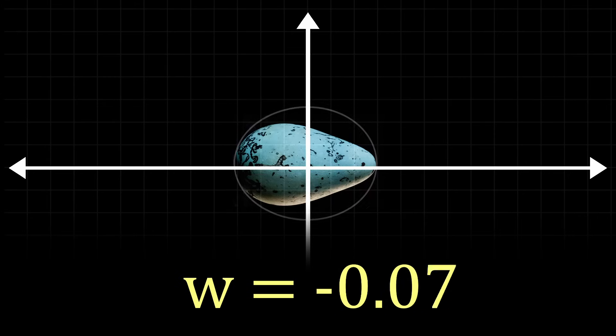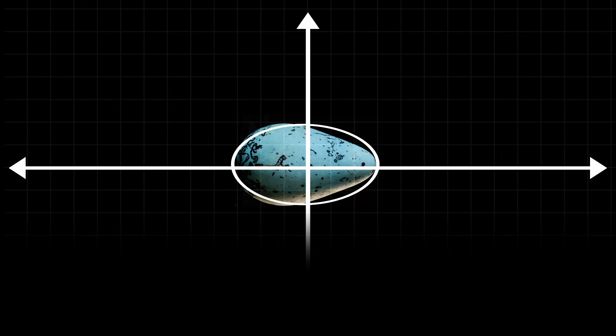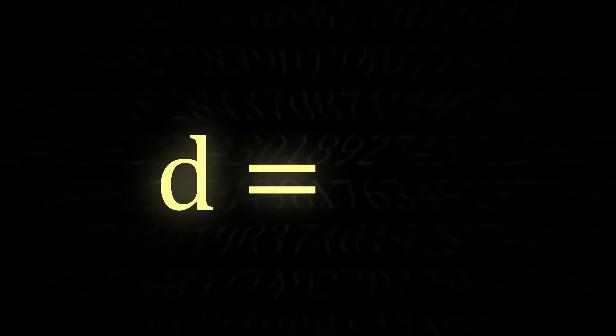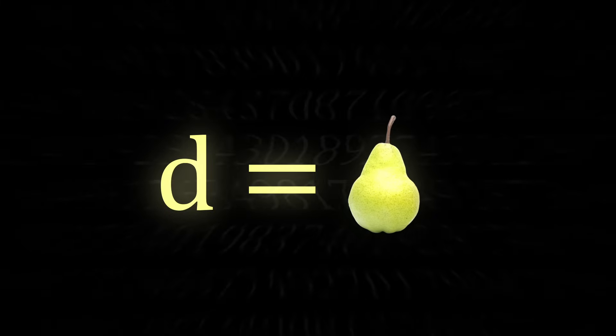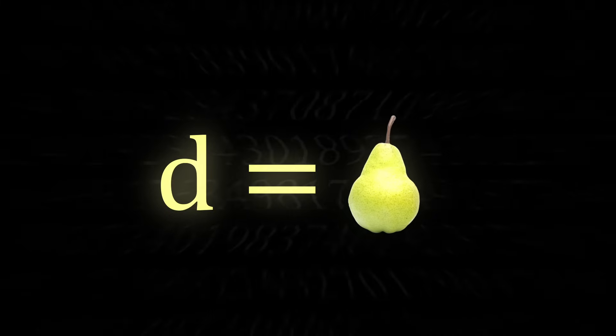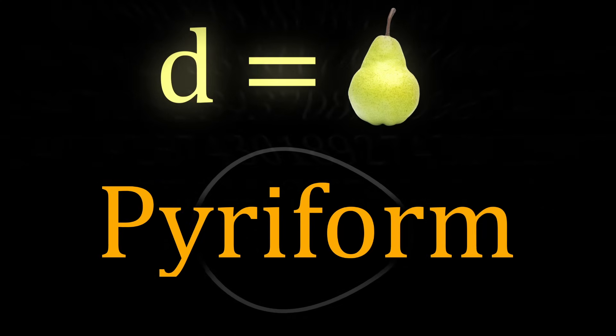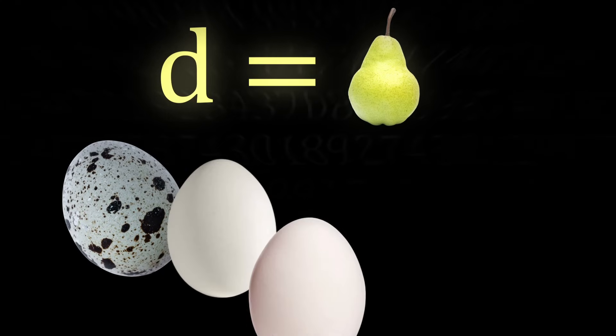So we need an extra variable that controls how pear shaped the eggs are. Let us define this variable as d, and it controls the pearness of the egg. This new type of shape is called a piriform egg, and can theoretically match the shape of every conceivable egg that exists.